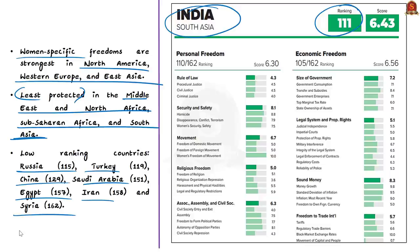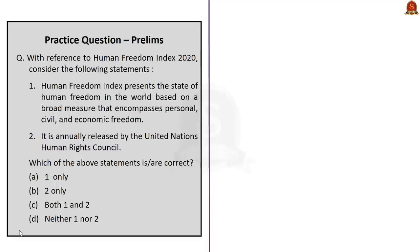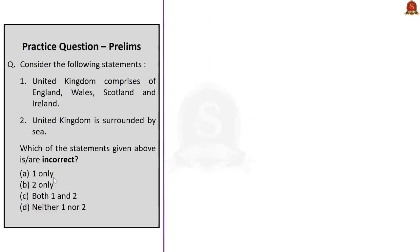Now with this information, see this question. With reference to Human Freedom Index 2020, consider the following statements. The first statement reads, Human Freedom Index presents the state of human freedom in the world based on a broad measure that encompasses personal, civil, and economic freedom. Yes, this statement is correct. The second statement reads, it is annually released by the United Nations Human Rights Council. This statement is wrong. We have seen that it is co-published by the Cato Institute and the Fraser Institute. Here statement one is correct and statement two is incorrect. So the correct answer is option A, one only.